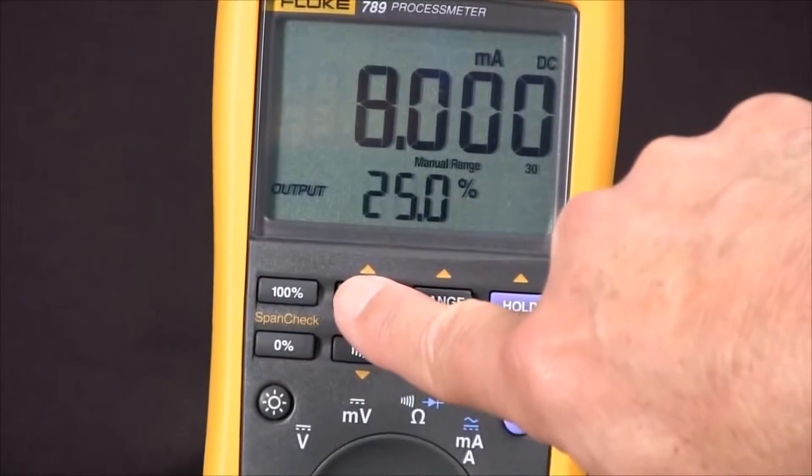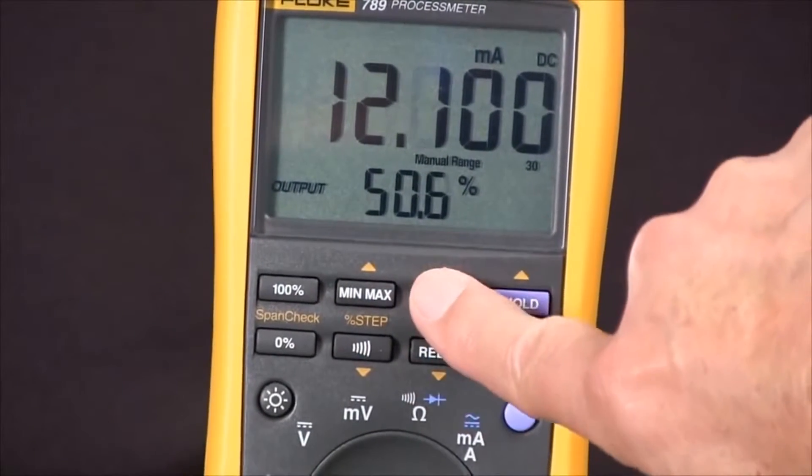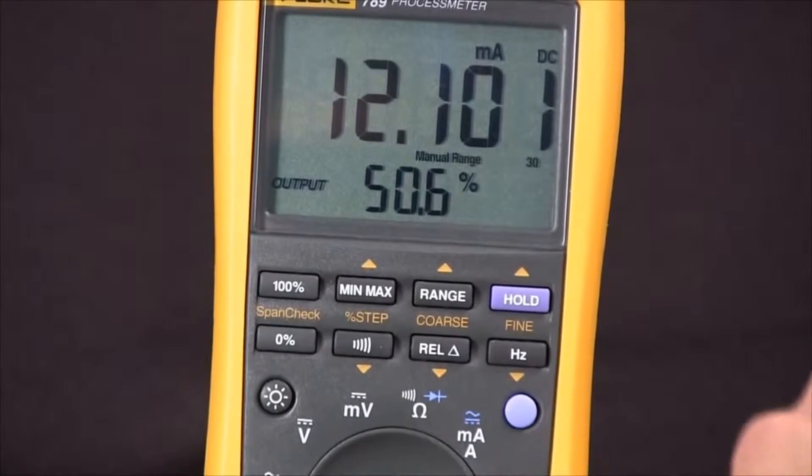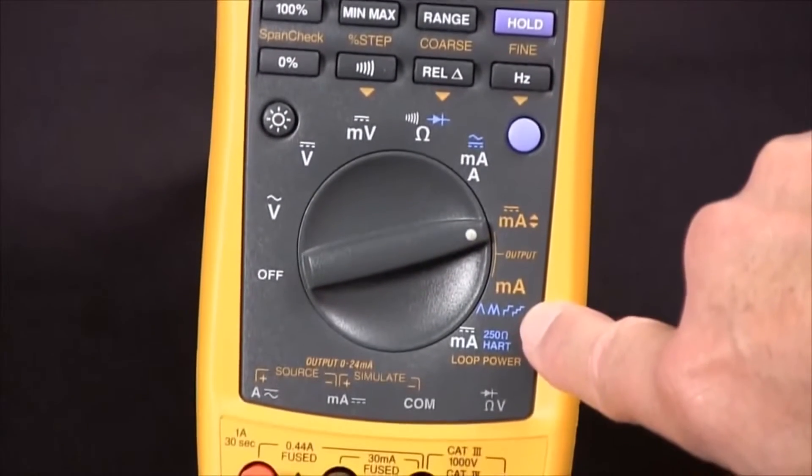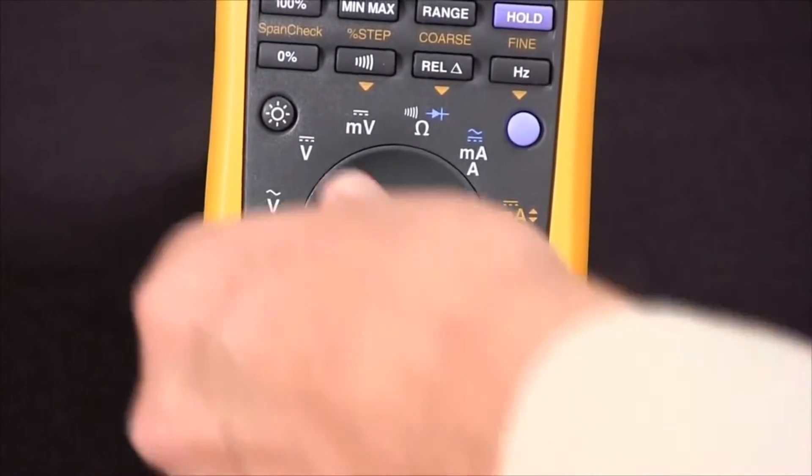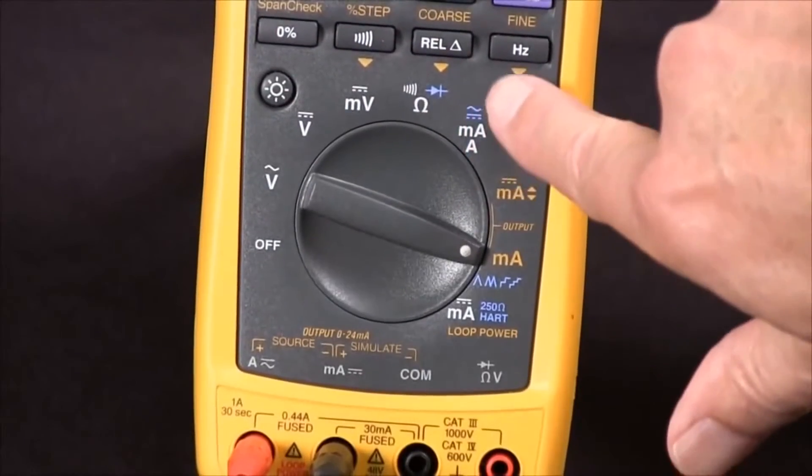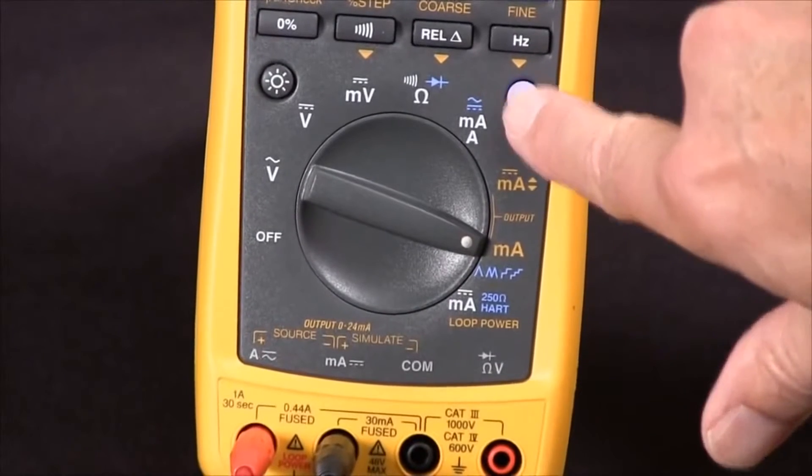If we need to do automatic ramping or step functions, we can go here to the other sourcing position. And with the blue key we can select one of those four.